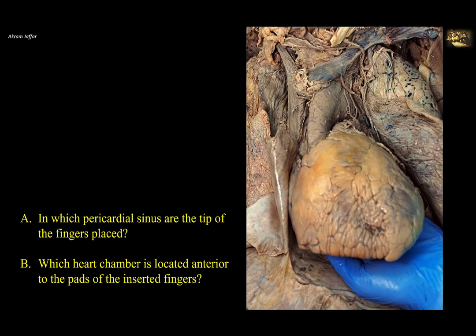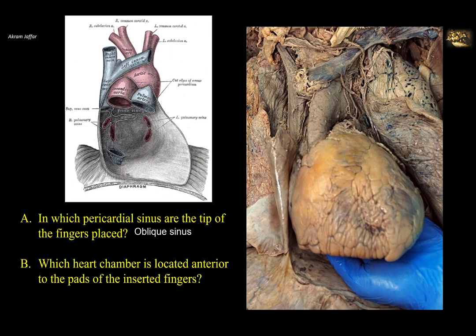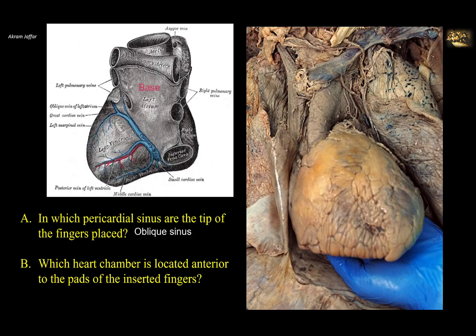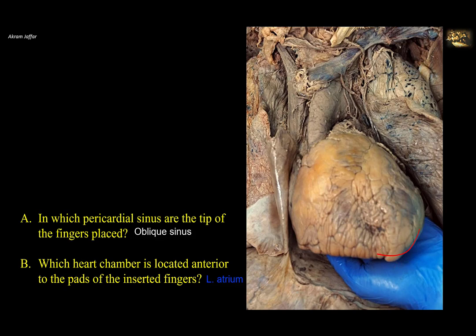In which pericardial sinus are the tips of the fingers placed, and which heart chamber is located anterior to the pads of the inserted fingers? When the hand is passed in the pericardial cavity inferior to the heart, the fingers can access the oblique pericardial sinus. This sinus is located between the right and left pulmonary veins and the inferior vena cava. The heart chamber located anterior to the pads of the inserted fingers is the chamber that forms the posterior part of the heart — the base of the heart — which is formed by the left atrium. The pads of the fingers will face the left atrium, while the nails will touch posteriorly the esophagus.